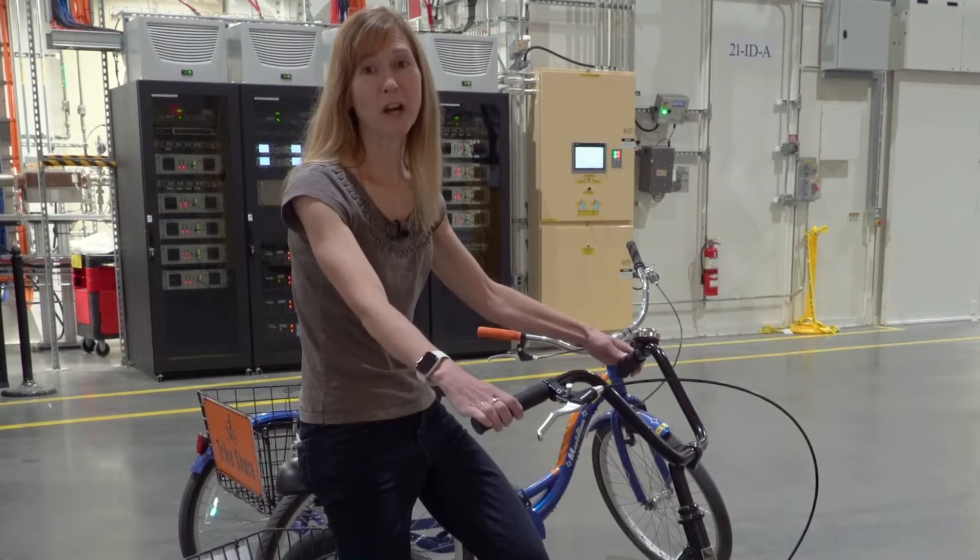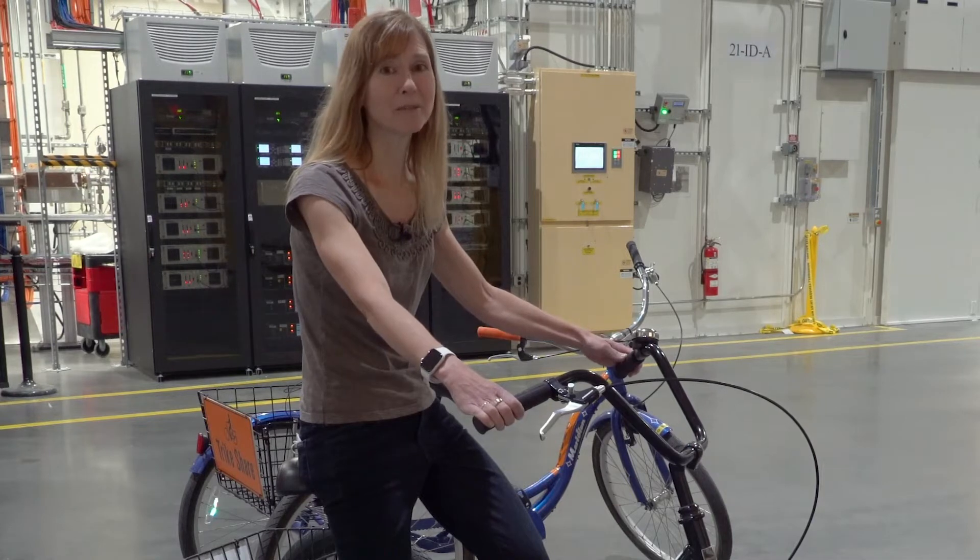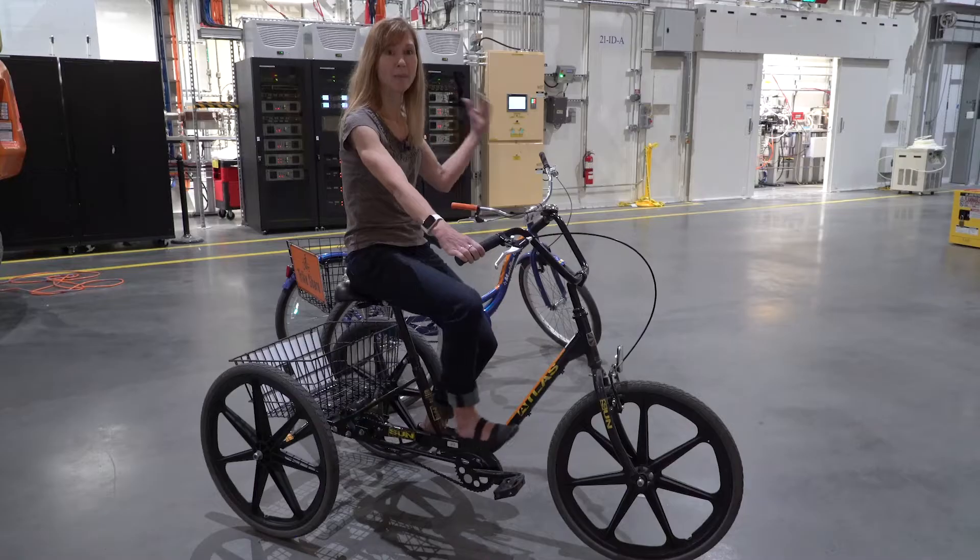NSLS-2 is a really large research facility, it's almost three quarters of a mile in circumference and so one of the best ways to get around the facility from beamline to beamline is by trike. Hop on and join me.